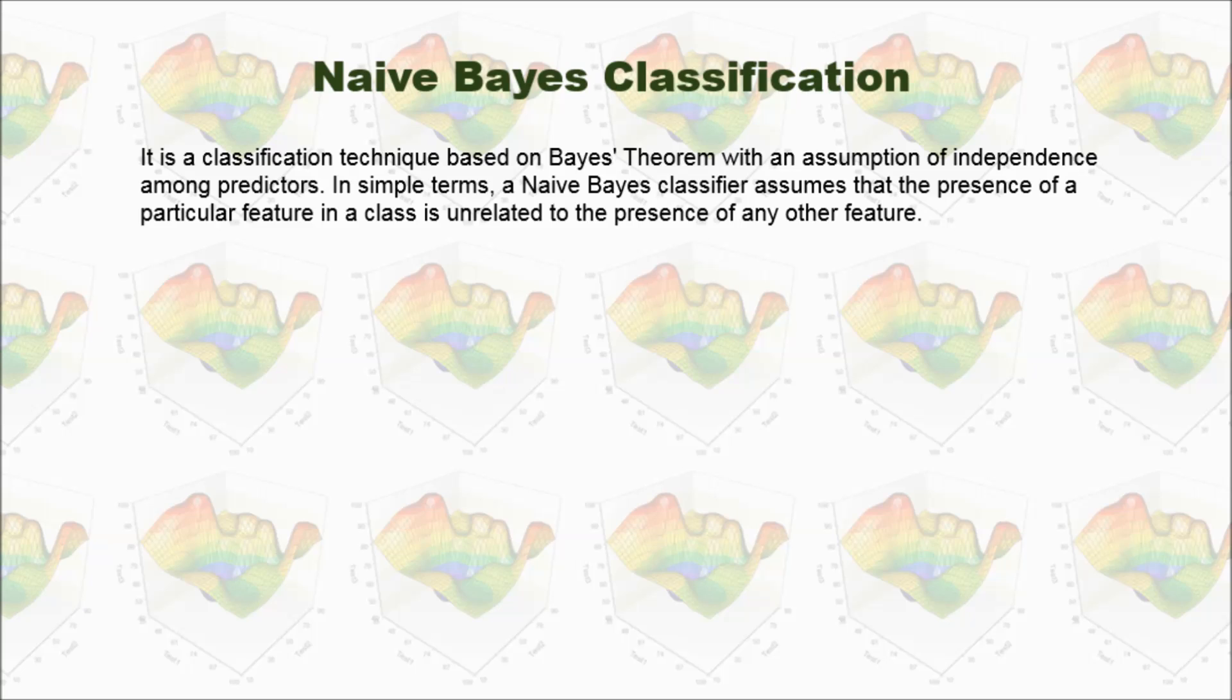So, what is naive Bayes classification? This is a classification technique based on Bayes' theorem with assumption of independence among predictors. That is saying, if you have several predictors, you assume all those predictors are independent. That is saying, all those features in the class are unrelated to the presence of any other feature.